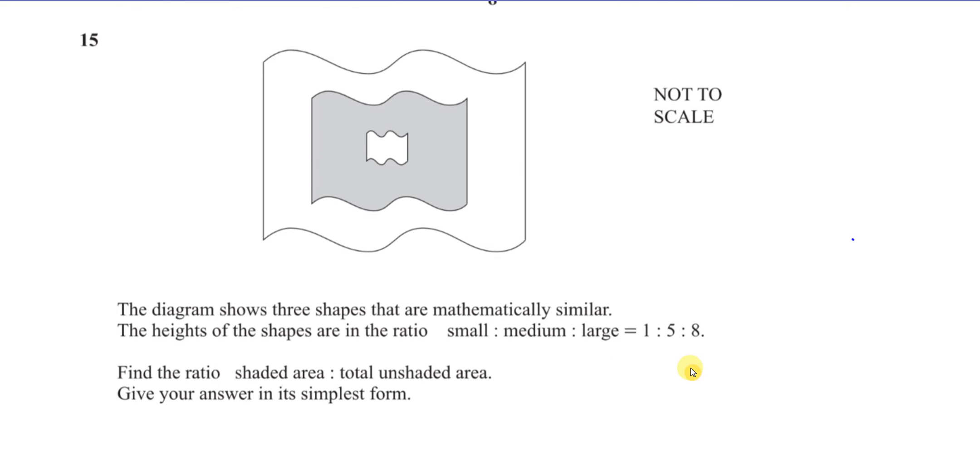Find the ratio of the shaded area, which is this part, it's like the medium one take away the small one, to the total unshaded area, so it's just the white parts, without the shaded part.